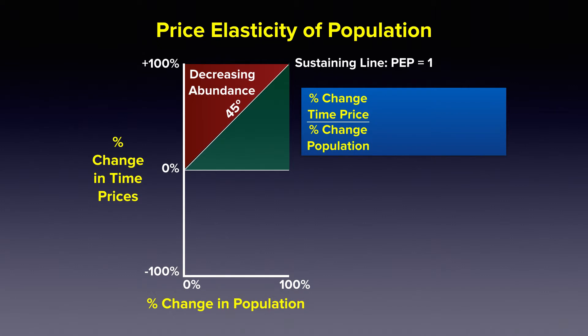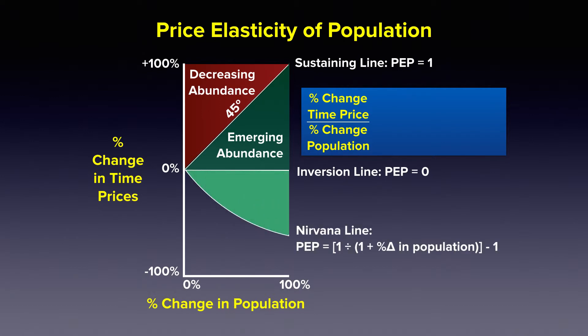Below that line, prices will continue to increase but not as fast as population is increasing. Below the zero line, we have two zones. The zero line we also call the inversion line. Below that area, the two zones are divided by what we call the Nirvana line.